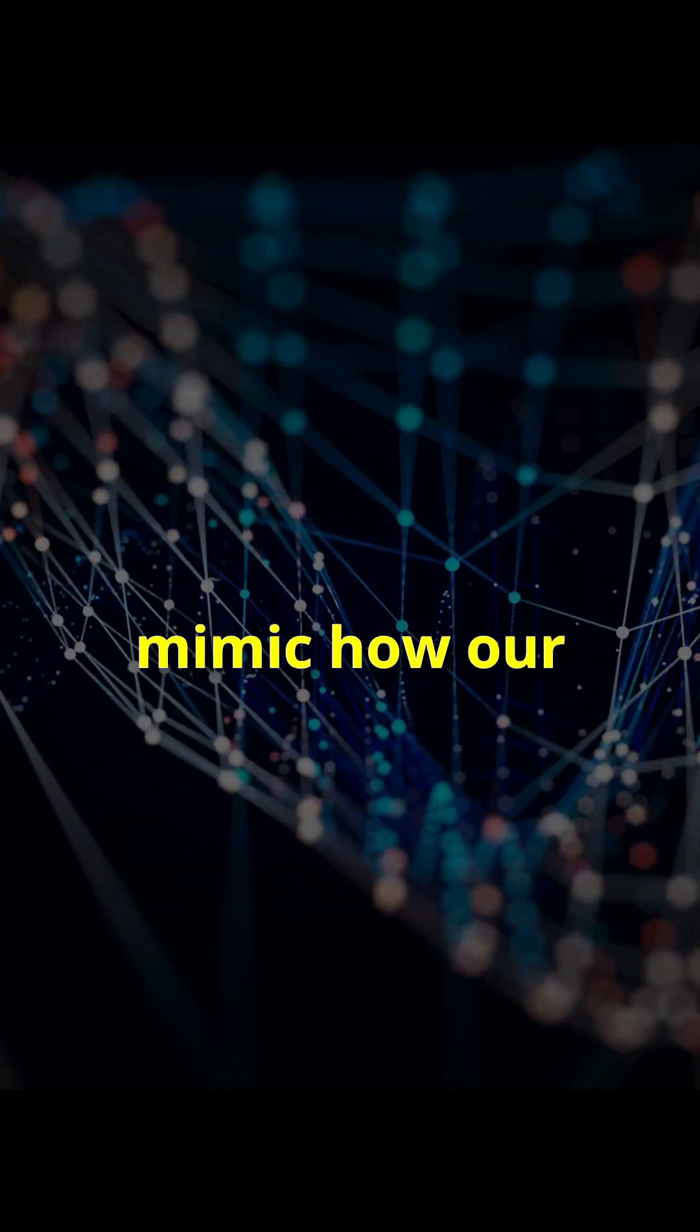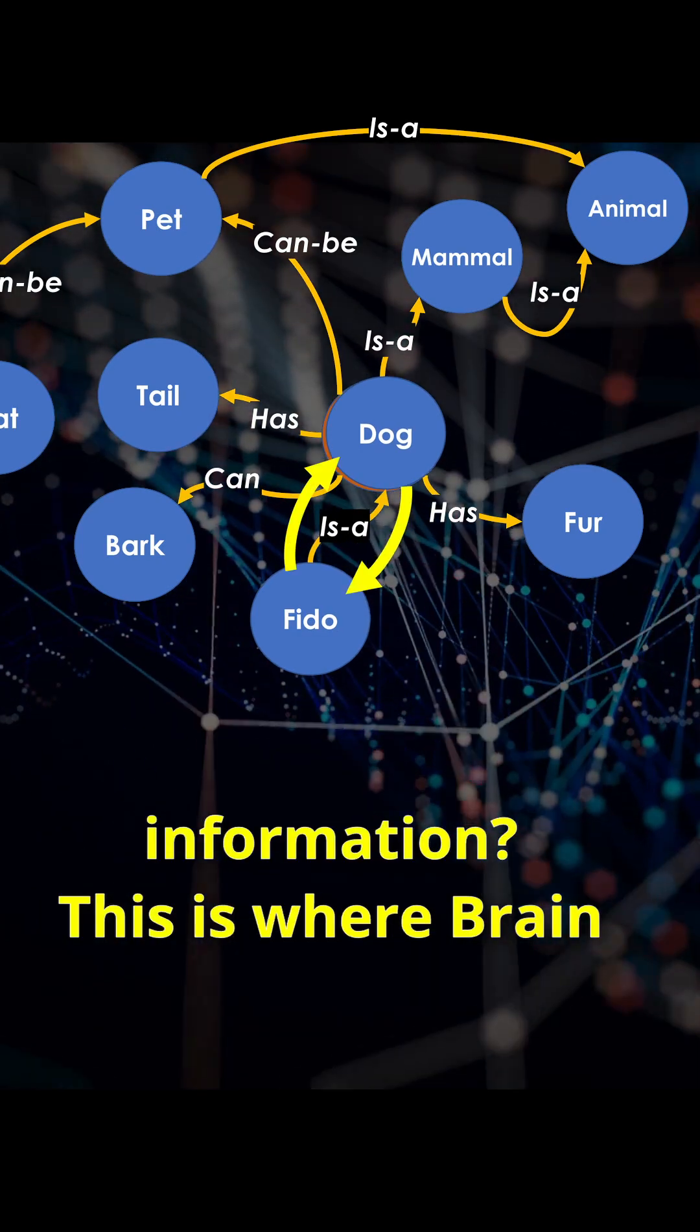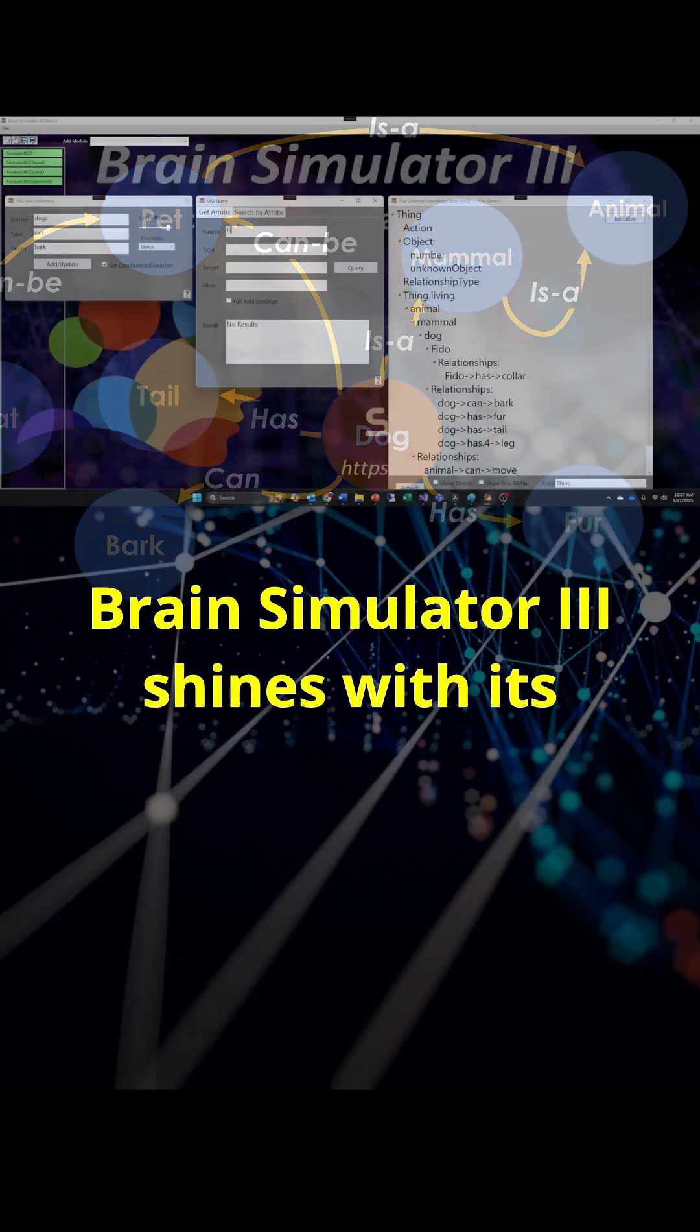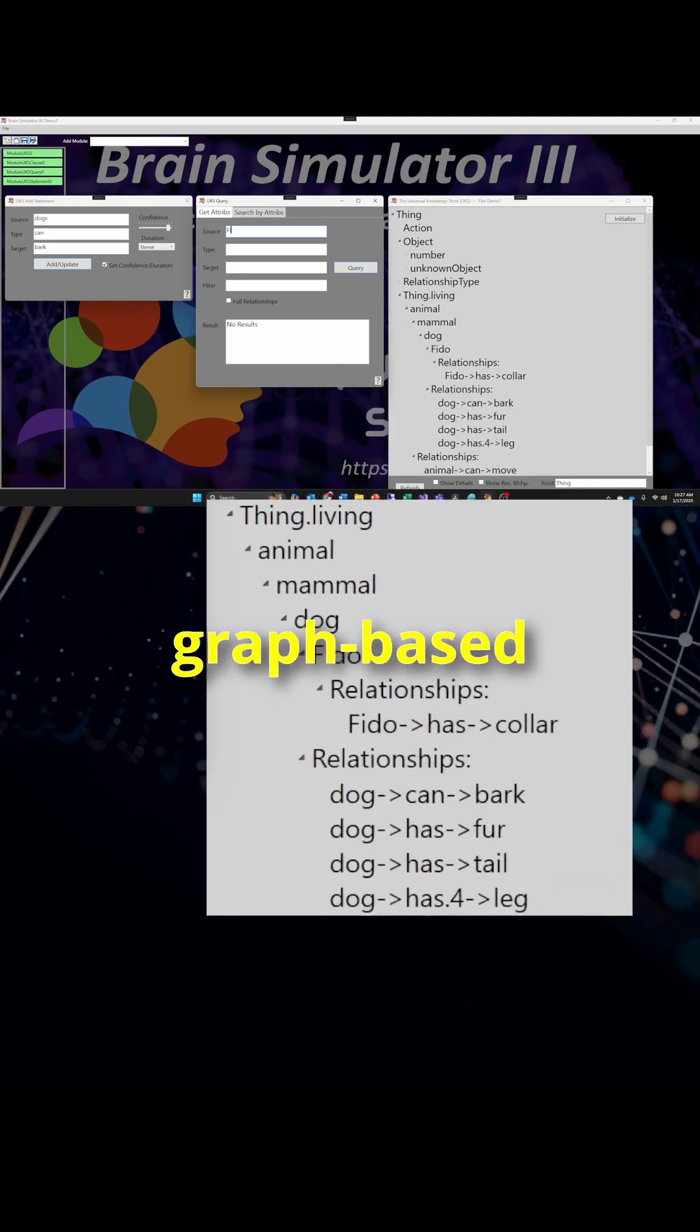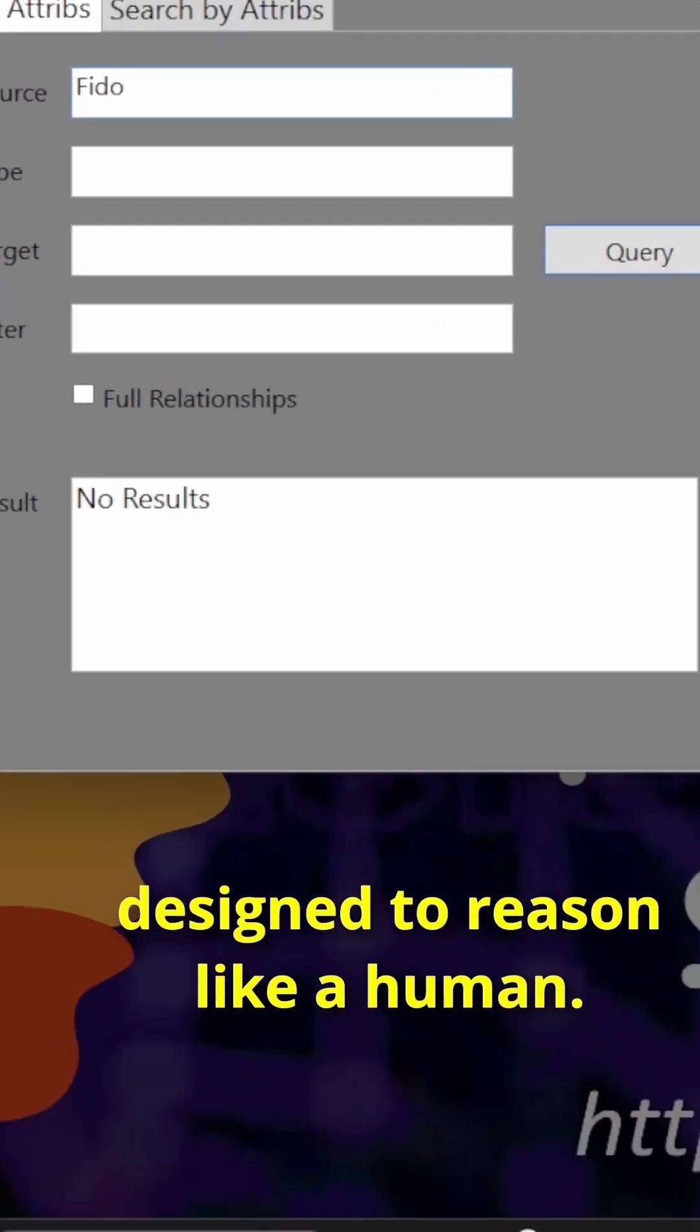But what if AI could mimic how our brains process and relate information? This is where Brain Simulator 3 shines with its graph-based universal knowledge store designed to reason like a human.